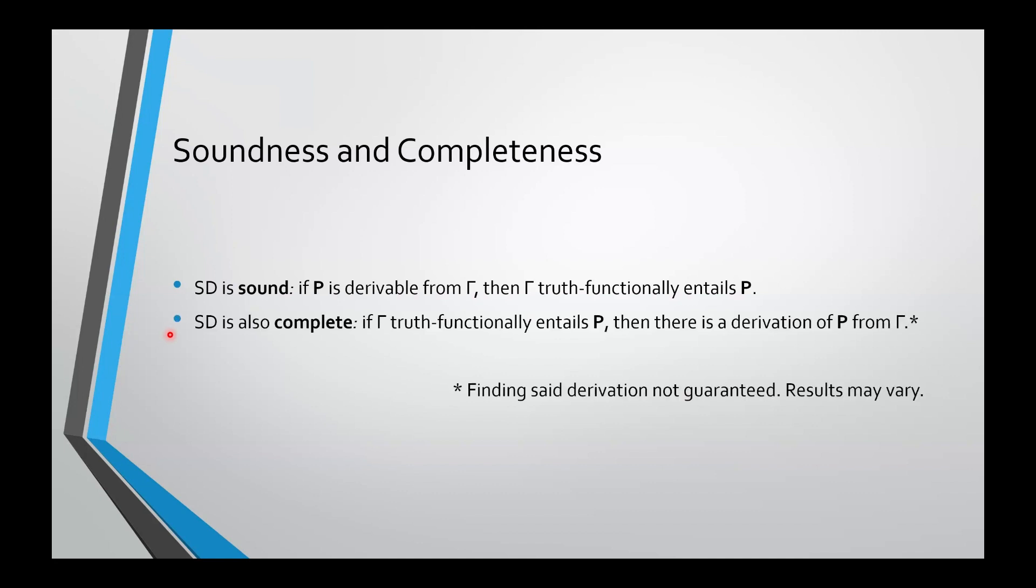SD is also complete. If gamma truth functionally entails P, then there exists a derivation of P from gamma. You're not guaranteed to be able to find it. There's no algorithm for finding these derivations, but we can prove that the derivation does exist.